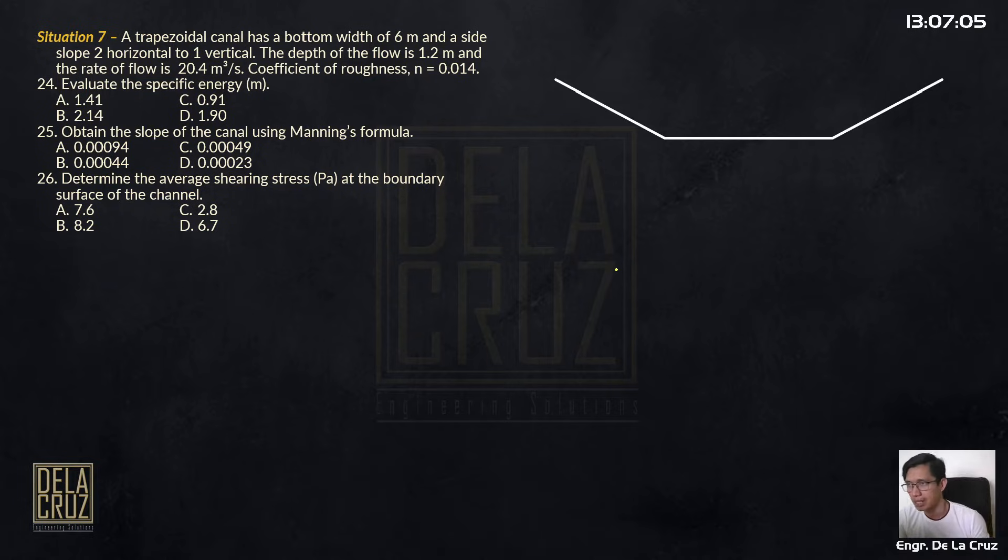So trapezoidal canal, the side slope is 2 is to 1, 6 meters width, and the depth of flow is 1.2 meters. First, we need the dimensions here. I'll start with the prerequisites. I'll cut it here, this is my style.